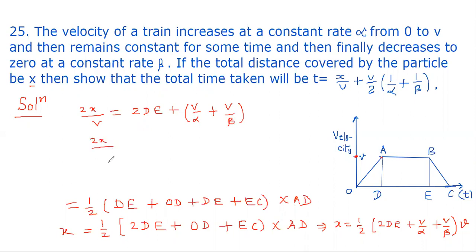So 2x/v - v/alpha - v/beta = 2DE. Therefore, DE = (1/2)(2x/v - v/alpha - v/beta).